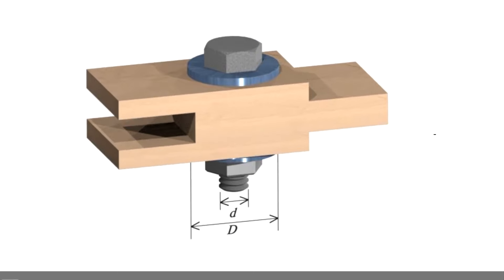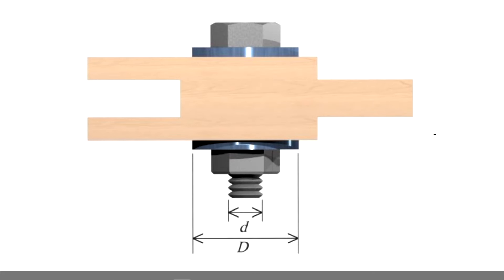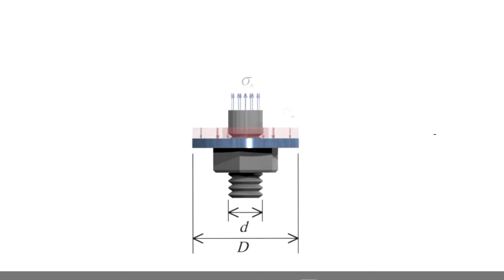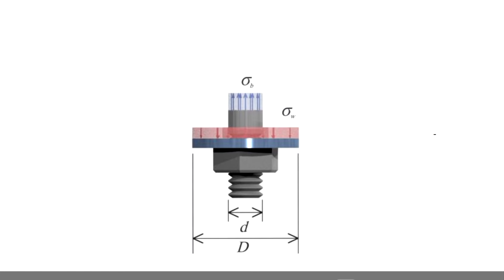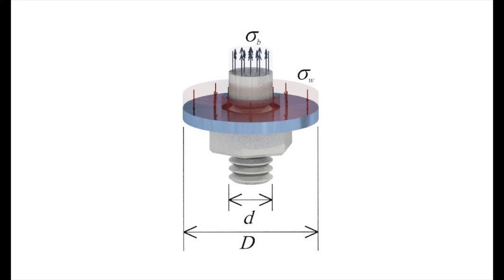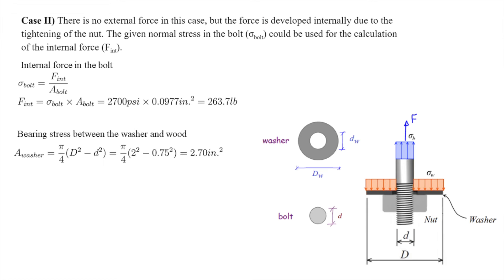In Case 2, there is no external force but the nut is tightened so that an internal stress of 2700 psi is developed in the bolt. That internal stress is used to calculate the internal force: stress equals force divided by area, and the bolt area is pi times diameter squared over 4, so force equals stress times area. This internal force is transferred to the wood board through the washer. The washer spreads the force over a larger area — washer area equals pi over 4 times (external diameter squared minus internal diameter squared) — and the resulting bearing stress is force divided by that washer area.